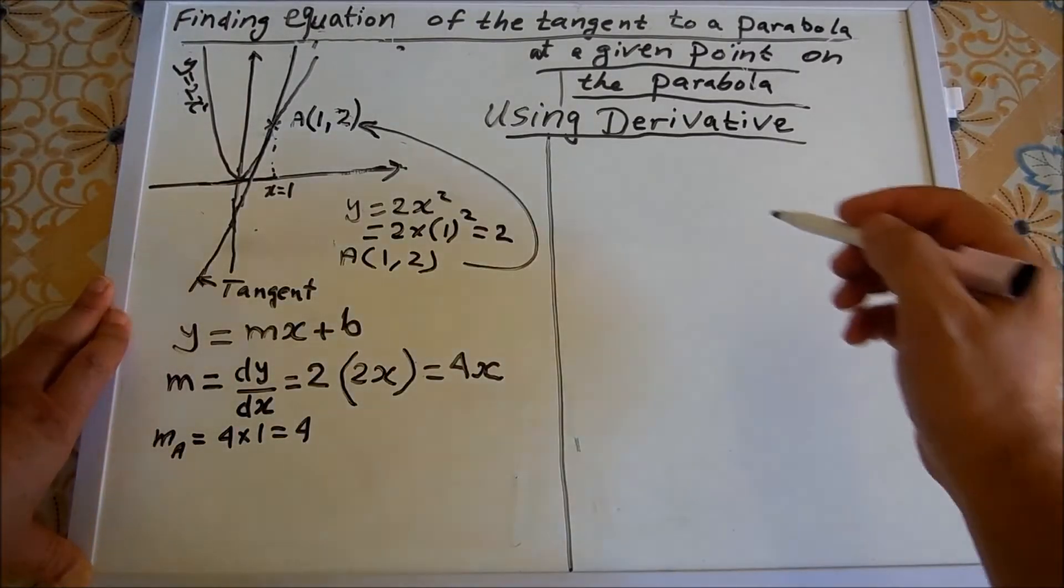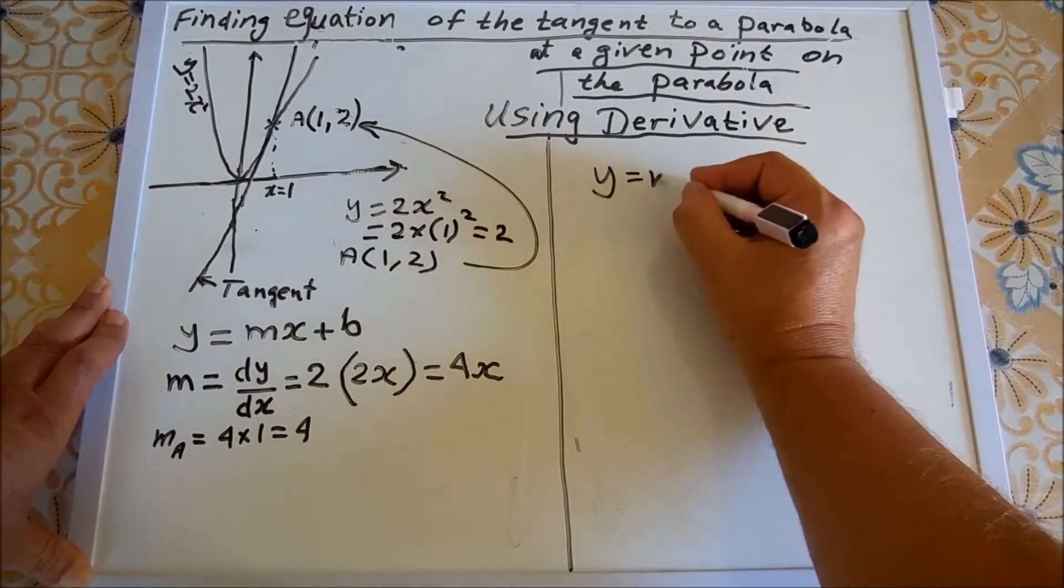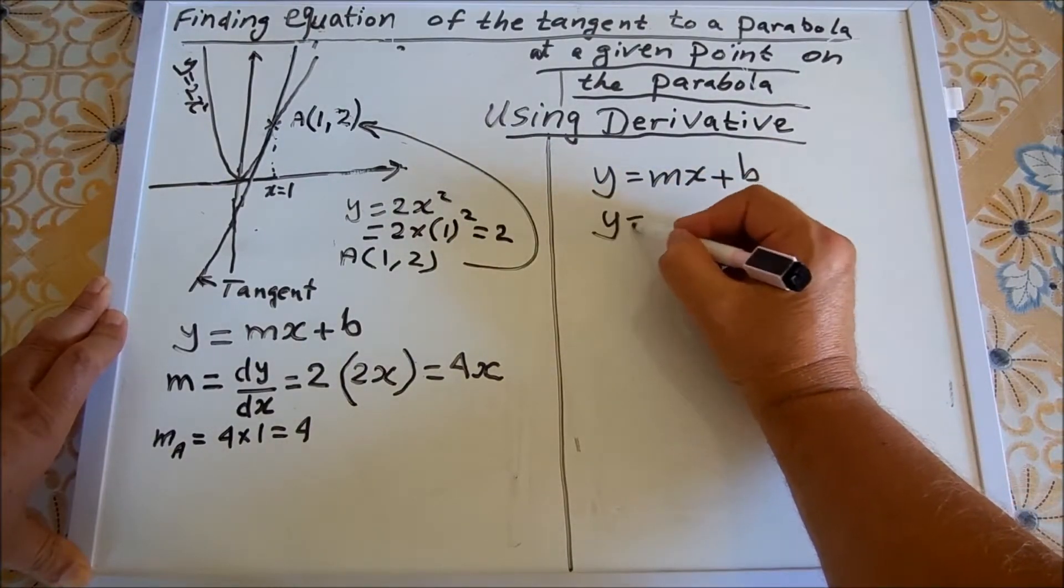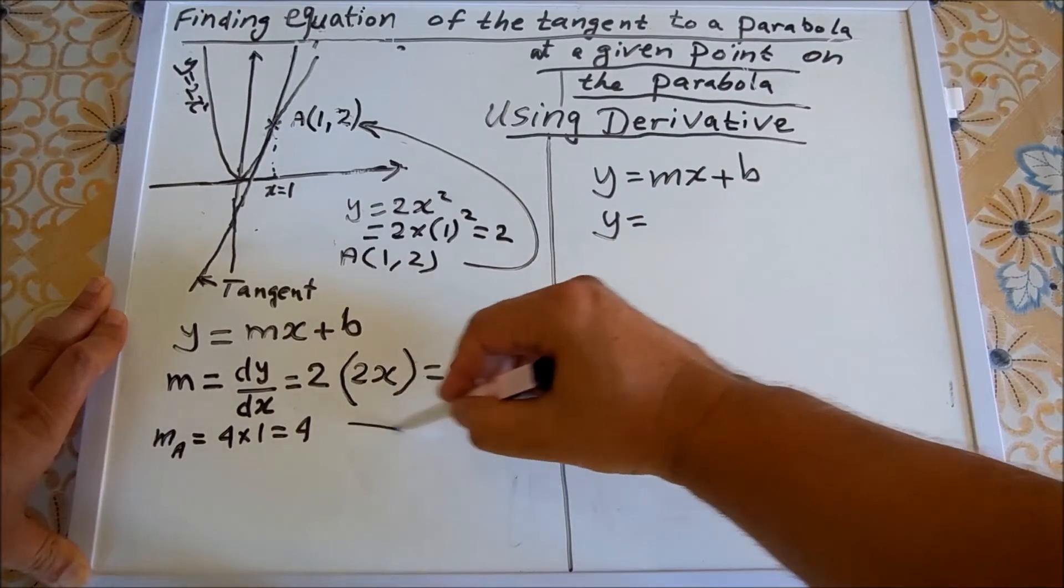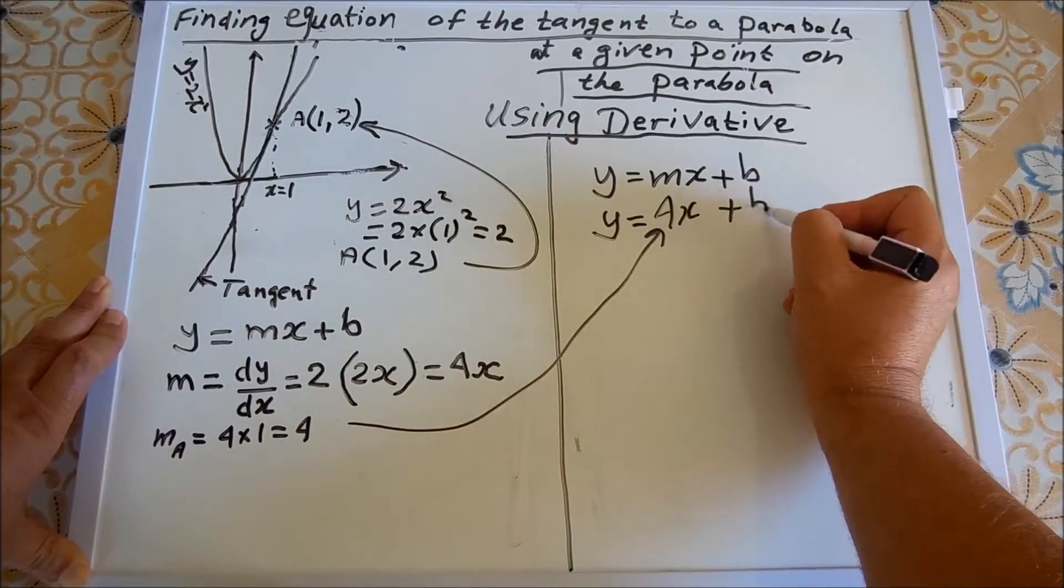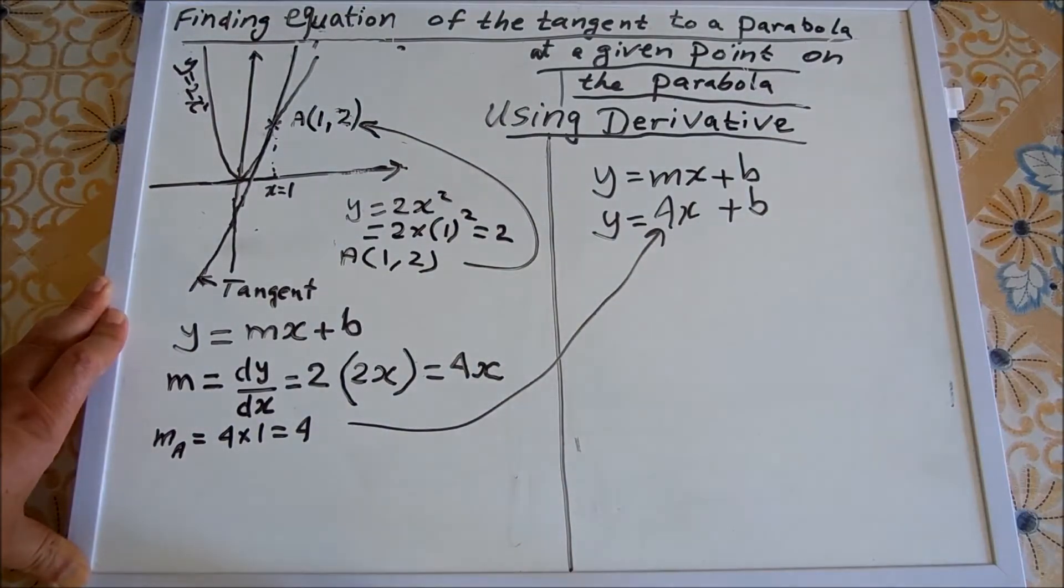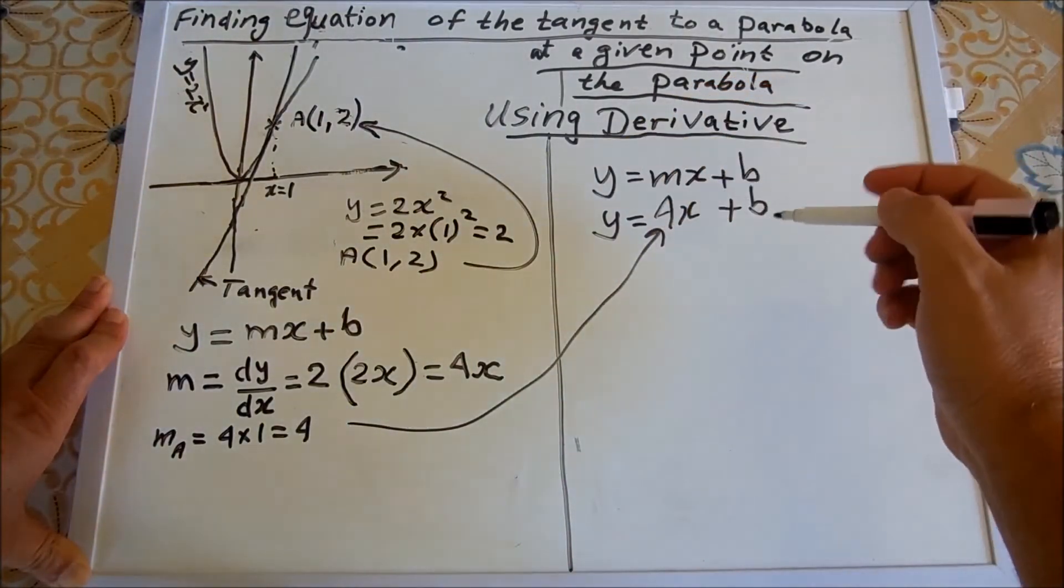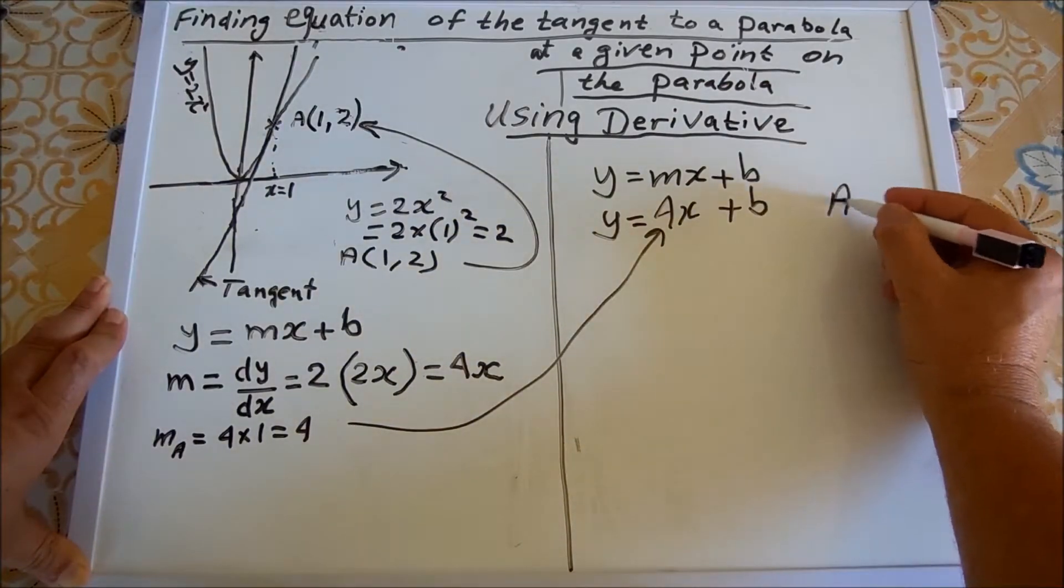Now we sub it back in the equation y equals mx plus b, so y equals 4x plus b. We need to find the value of b now by subbing x and y of point A.